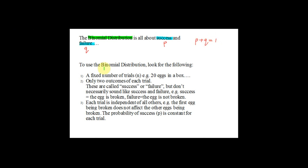To use the binomial distribution, you look for the following characteristics. First, binomial distributions always have a fixed number of trials, denoted by n. For example, if you had 20 items in a box, your n equals 20. Second, binomial distributions only have two outcomes for each trial — these outcomes are called success or failure.